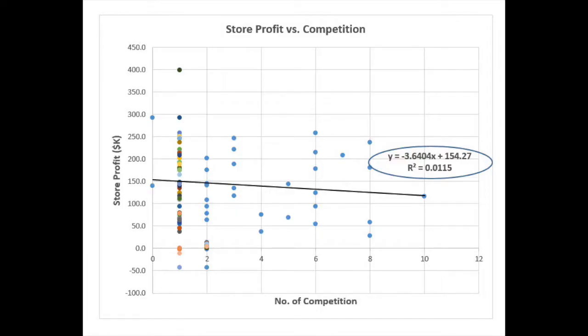That means you need to verify the correlation between lead and lag indicators. A simple way to do that is to prepare a scatter plot. This scatter plot shows the results for store profits and the number of competitors. One would guess that there's a high correlation between the two, but the scatter plot shows that there is little correlation.